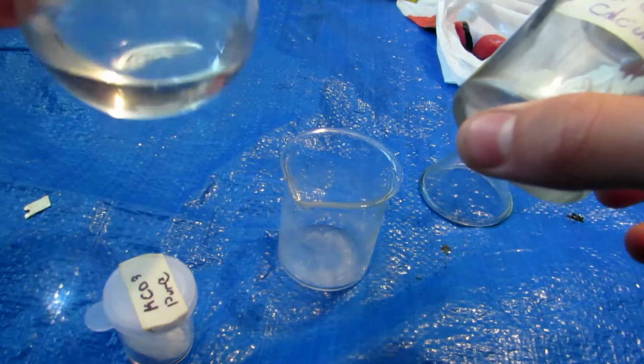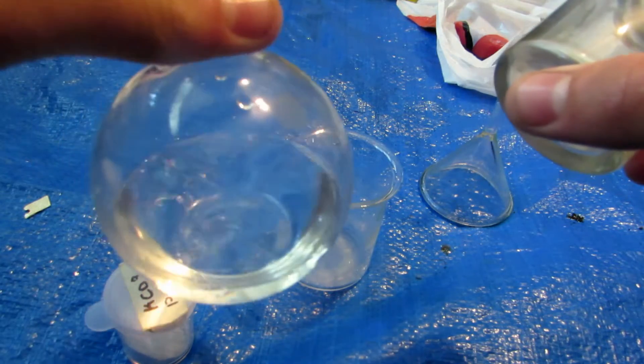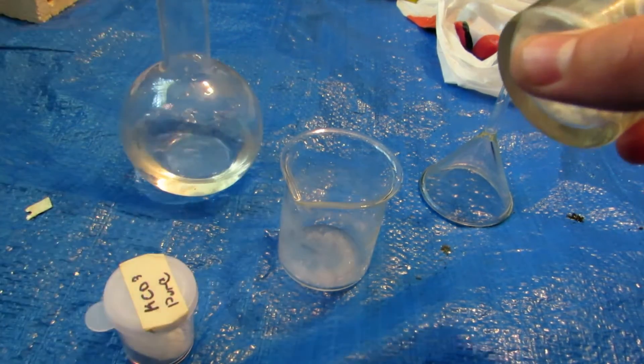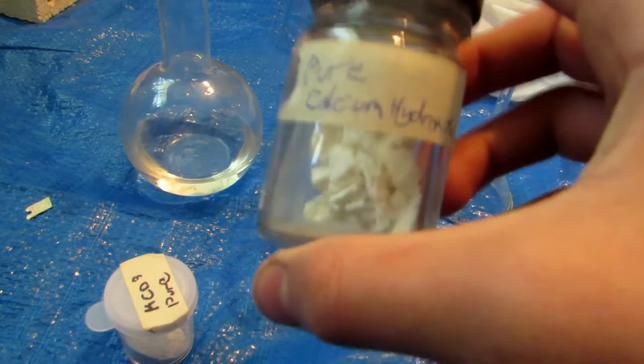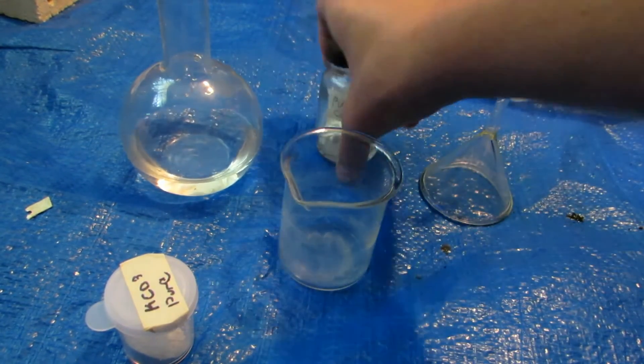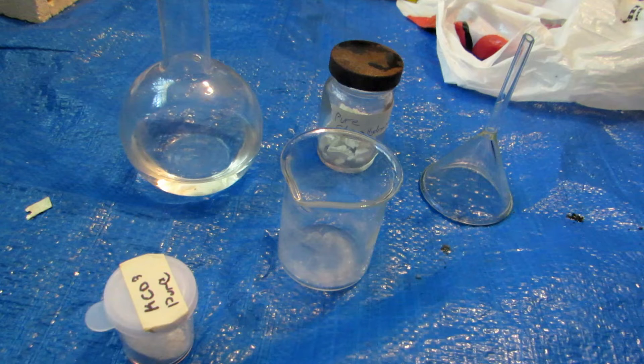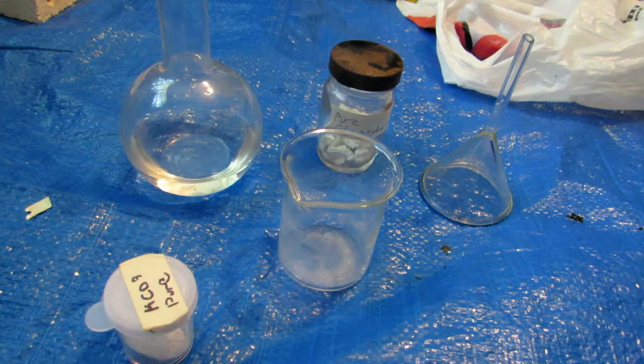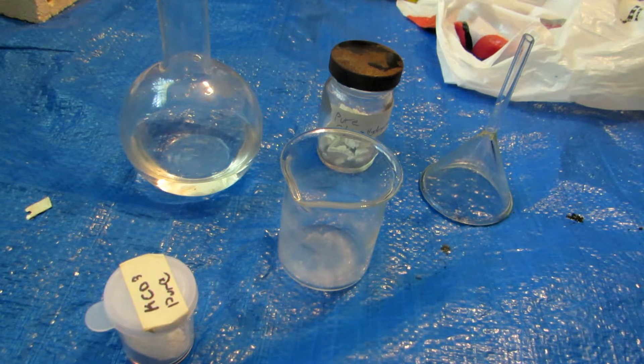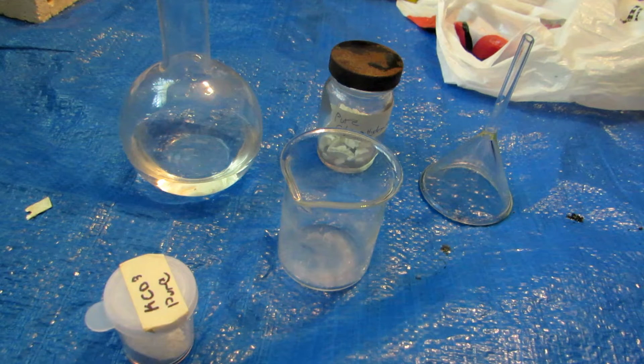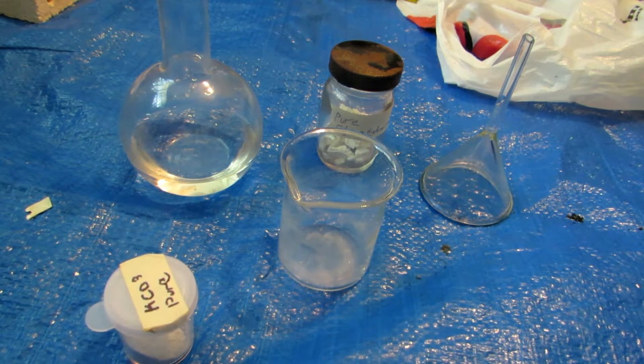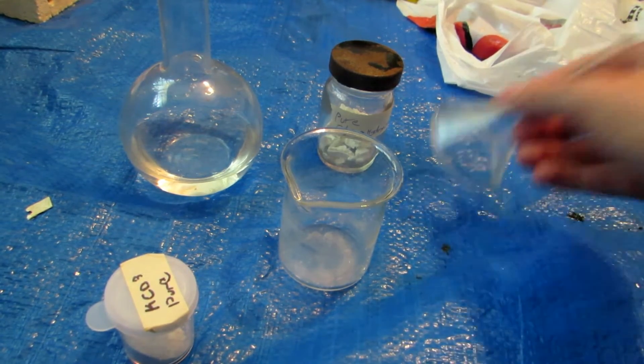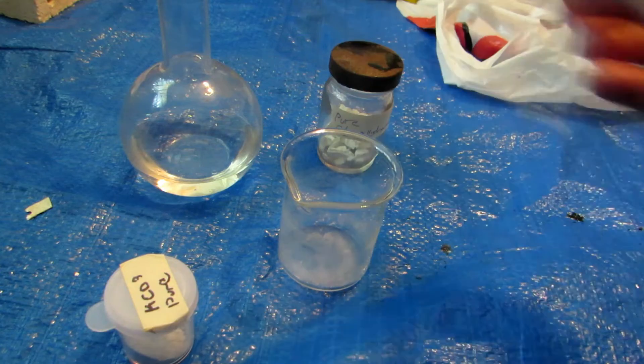Now this calcium hydroxide was also made in a previous video from some other very simple household materials. So we're going to start by taking a fair amount. The exact ratio doesn't really matter. We're just going to take some distilled water, make sure it's very pure distilled water, and add some calcium hydroxide into it.